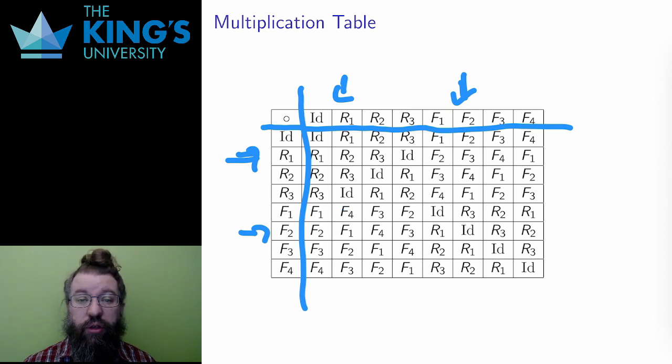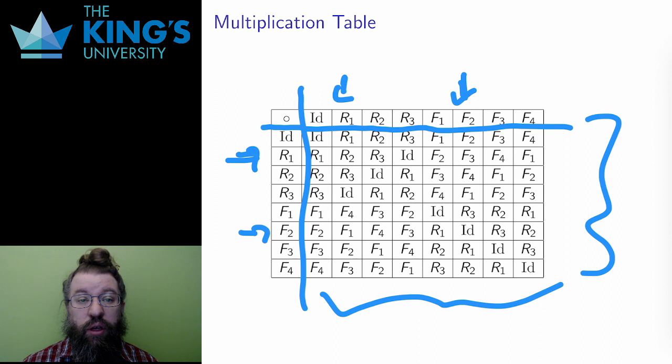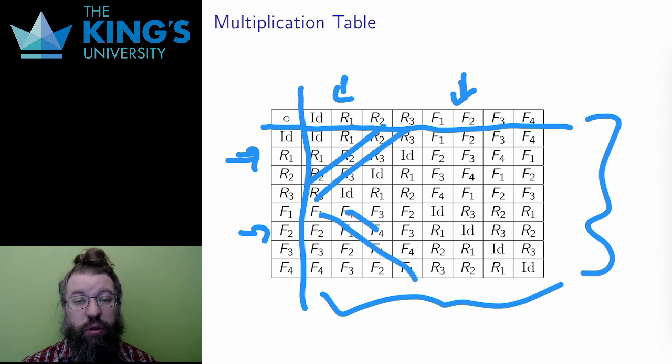Algebra cares about structure. This multiplication is the structure of the group D4. Everything I need to know about D4 is here. There are some interesting patterns here. See how there are diagonal lines of the same transformations? See how the identity shows up.